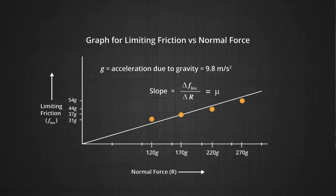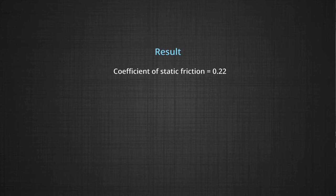You can also plot a graph between limiting friction F and the normal force. The slope of this graph is going to be the value of mu, or the coefficient of friction. So you can report your result.